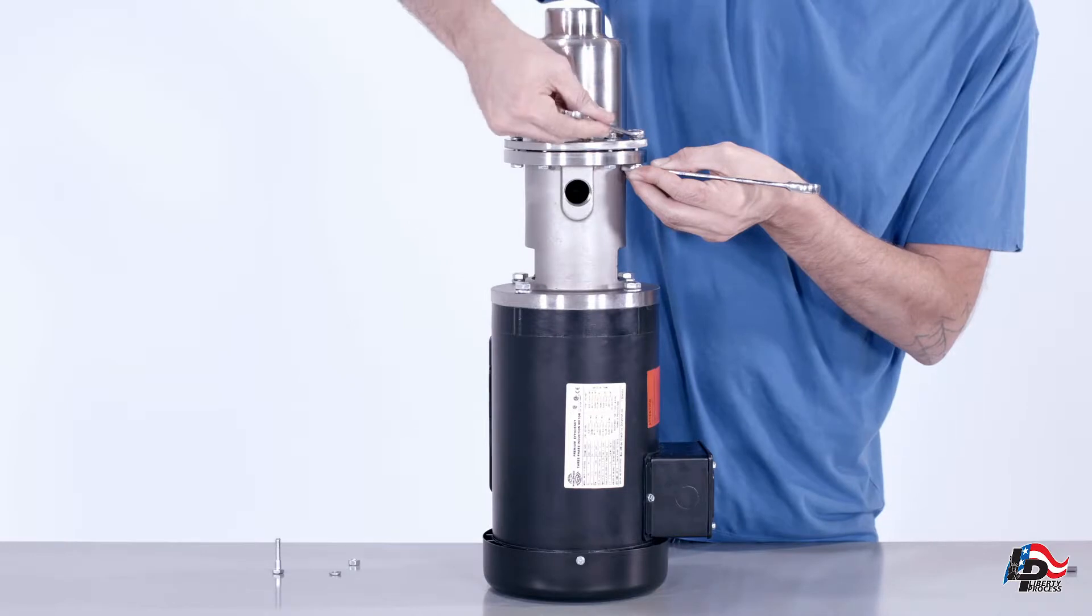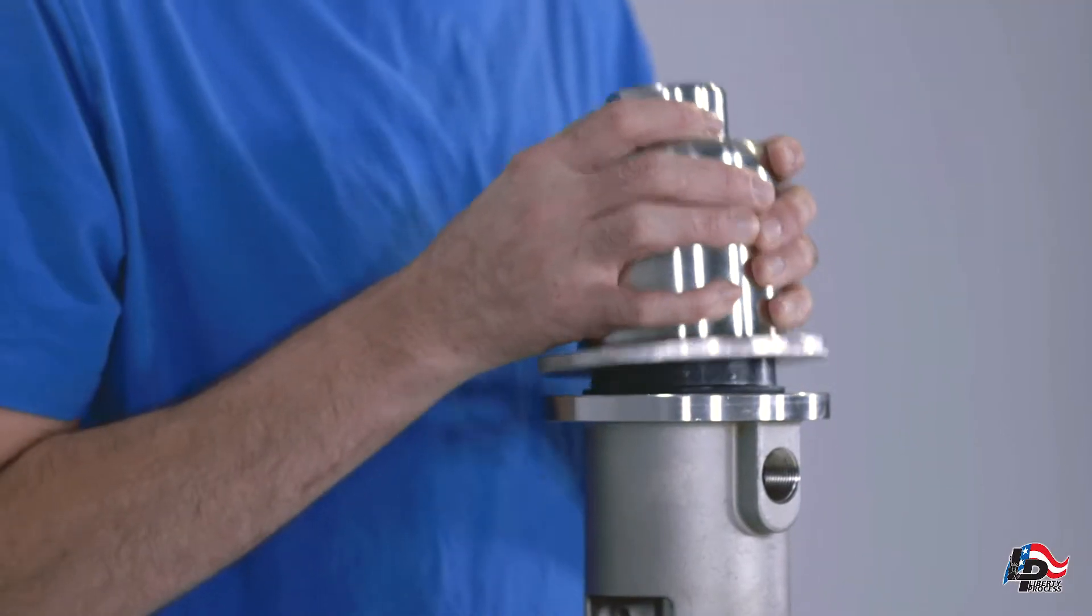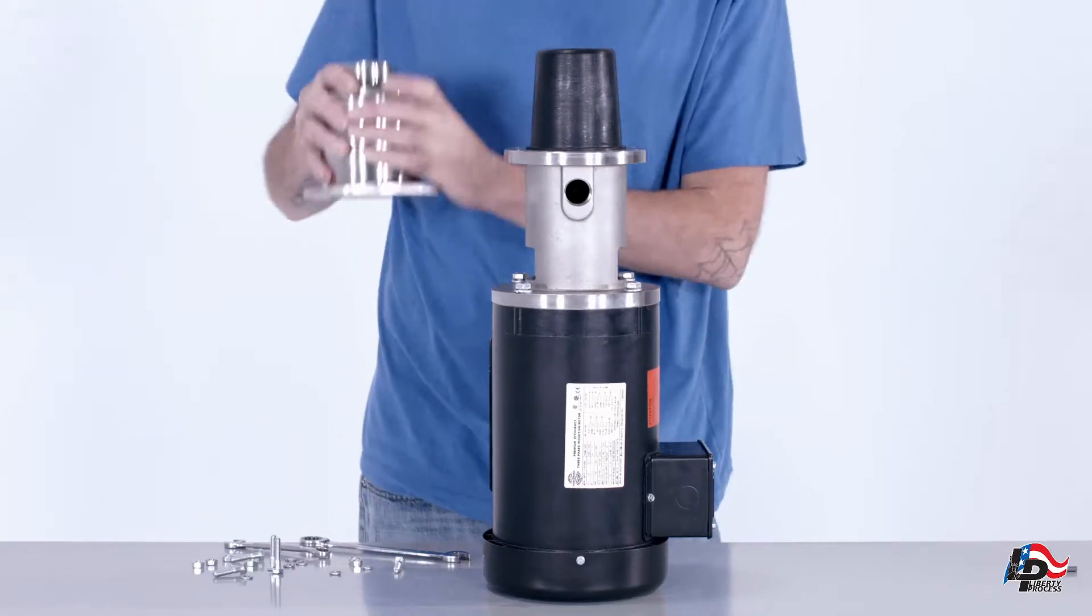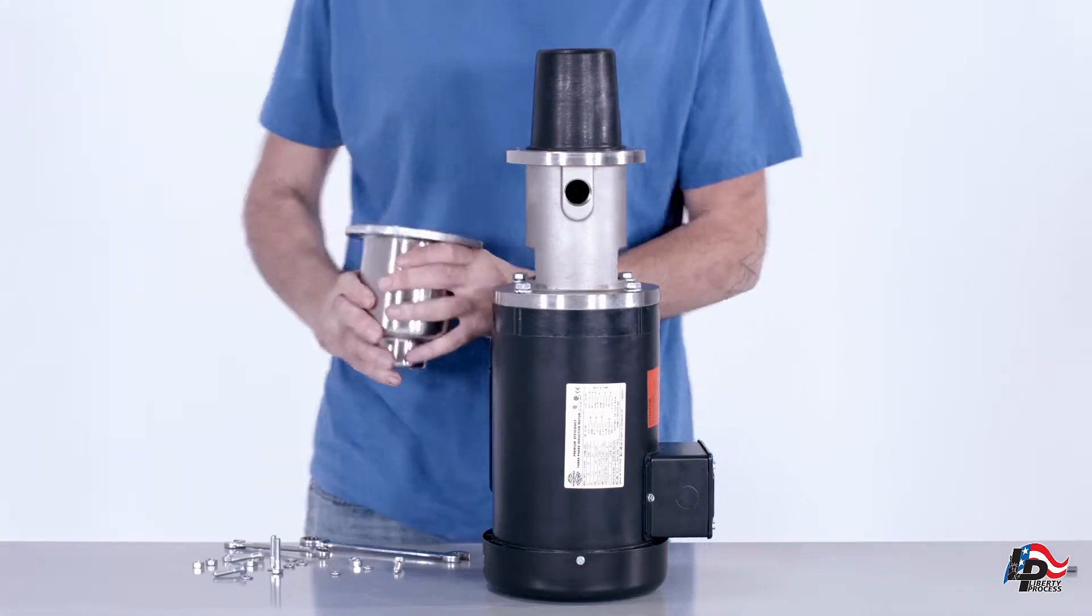Once the casing bolts are off, you can lift the suction casing off the pump exposing the pump stator. Check the casing for debris and clean if necessary.